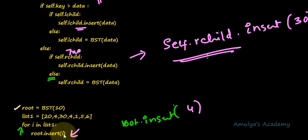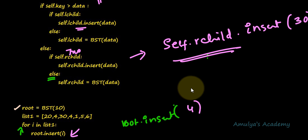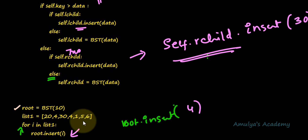Next root.insert will be executed for the remaining values: 1, 5, 6 and so on. When we call root.insert, self is root. If we call root.lchild.insert, then root.lchild will be self — just remember that. After inserting all values including 6, the for loop completes its execution and the program stops. This is about the insertion operation in a binary search tree. That's it for now guys, thank you for watching — don't forget to subscribe to my channel. I'll meet you in the next class, till then take care.